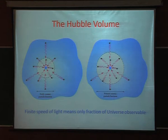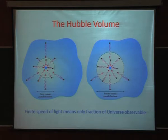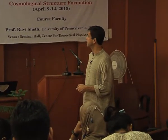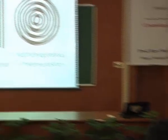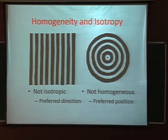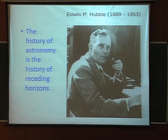The Hubble volume is essentially the speed of light times the age of the universe — as the universe gets older the Hubble volume is bigger. We will be careful about what distance we mean when calculating. The universe is also homogeneous and isotropic — a universe with a preferred direction is not isotropic, and one where the center is special is not homogeneous. We also know the universe is expanding.